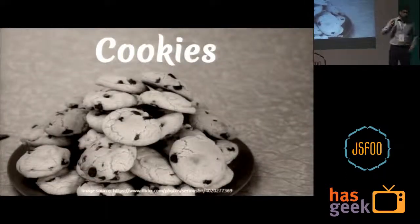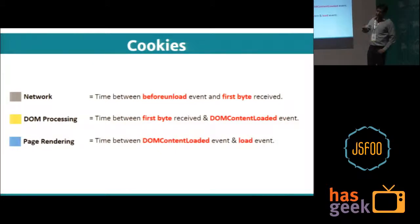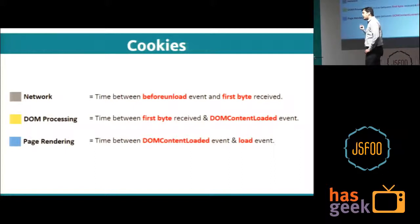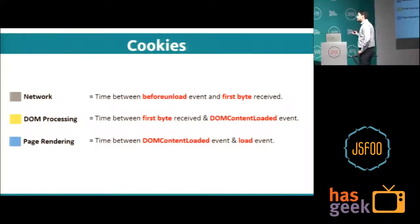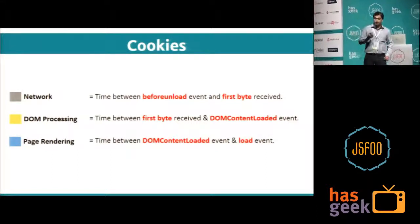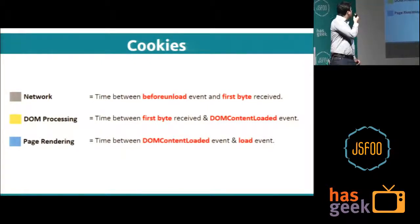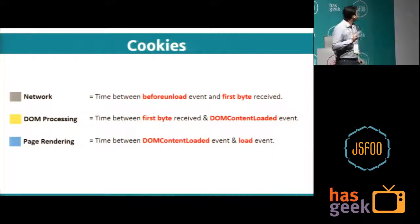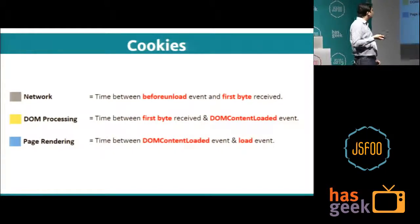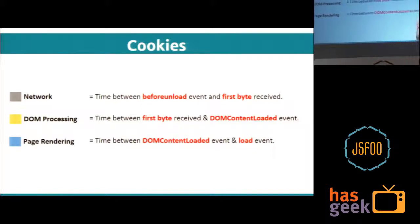There are typically two ways to do this — one is using cookies. For network time, just before an unload event happens, store the time in a variable. Then when a response comes, place a custom script just below the head tag with a timestamp to determine time to first byte. Subtracting these two events gives network time. Similarly, DOM processing time is calculated from the DOM content loaded event and first byte event, and page rendering time is from the DOM content loaded event to the fully loaded event. After collecting all these metrics, send them to the server for further processing.